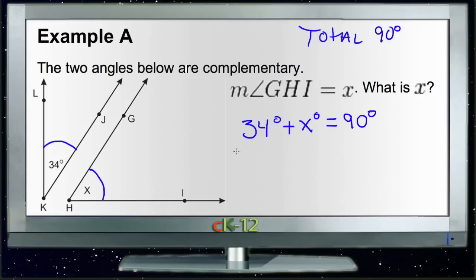So then we can simply subtract 34 from both sides, which will cancel on the left, leaving us with just X degrees. And on the right hand side, we have 56 degrees.